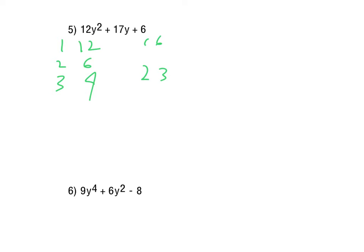Again, there's different ways that we can kind of figure this, but we're aiming for 17y. Again, these values here will be our y's. These will be the plain numbers. We'll set those up in our binomial times a binomial pattern. It's just a matter of how do we get the 17y.